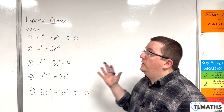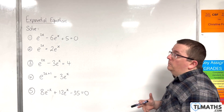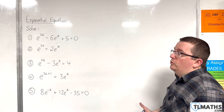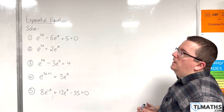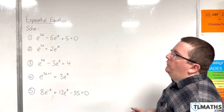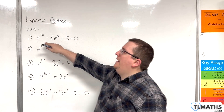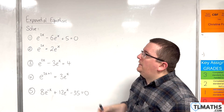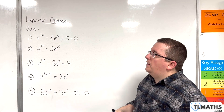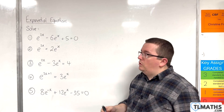In this video we're going to go through some examples of hidden quadratics involving e. For the first one we need to solve e to the 2x, take away 6e to the x, plus 5 equals 0.